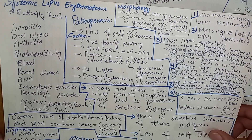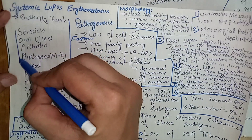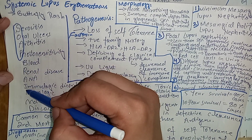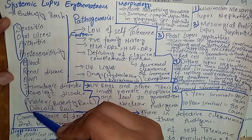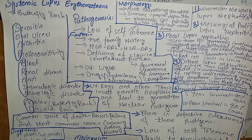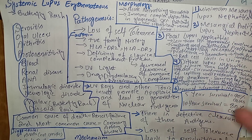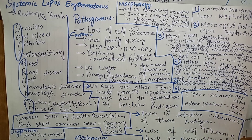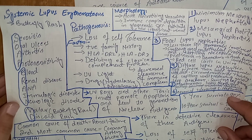We can use the mnemonic SOAP BRAIN MD to remember the symptoms of systemic lupus: S for serositis, O for oral ulcers, A for arthritis, P for photosensitivity, B for blood involvement, R for renal disease, A for ANA, I for immunologic disorder, N for neurologic disorder, M for macular rash, and D for discoid rash.